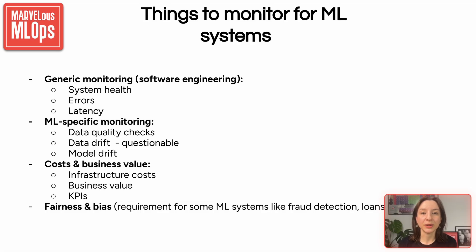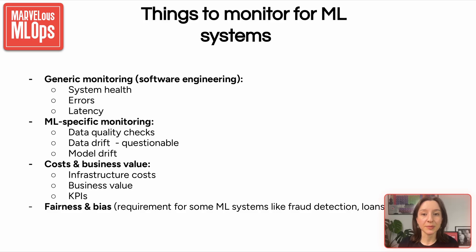Let's start with talking about what things to monitor in an ML system. First, the generic monitoring — these are the standard checks you would have in any production system. System health: are all services up and running? Are there any signs of CPU or memory pressure? Errors: are we seeing spikes in exceptions, failed API calls, or timeouts? And latency: how quickly is the system responding? For real-time systems, even small increases in latency can degrade user experience or downstream processing.